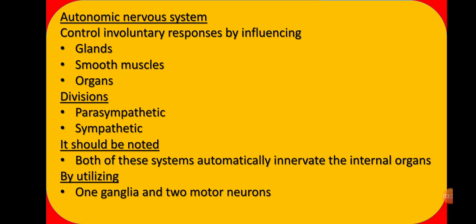The autonomic nervous system is classified into two divisions: parasympathetic and sympathetic. It should be noted that both of these systems automatically innervate the internal organs — meaning both systems carry messages to the internal organs of the body. Innervate means to reach the internal organs of the body.